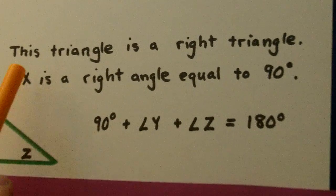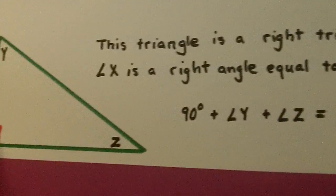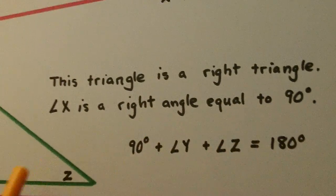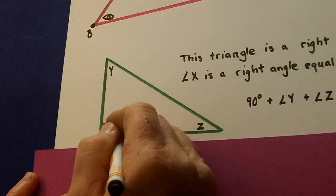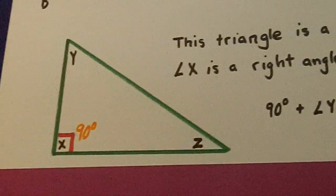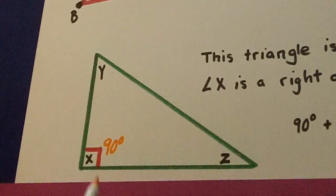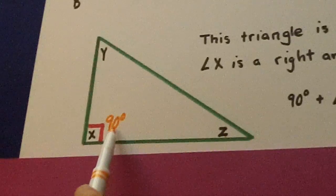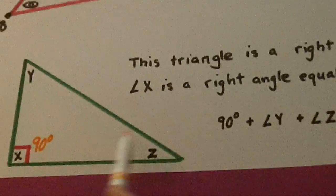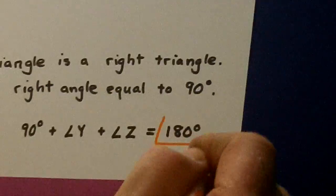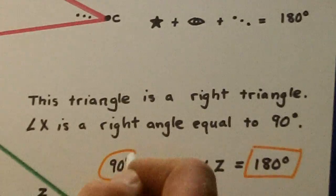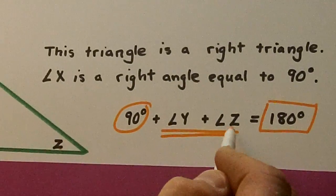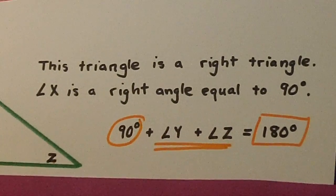So we go right down to here. This triangle is a right triangle. Angle X is a right angle equal to 90 degrees. Now, Y plus Z plus X have to be 90, and 90 have to be 180. If we take that 90 away from the 180, these two have to add up to 90.